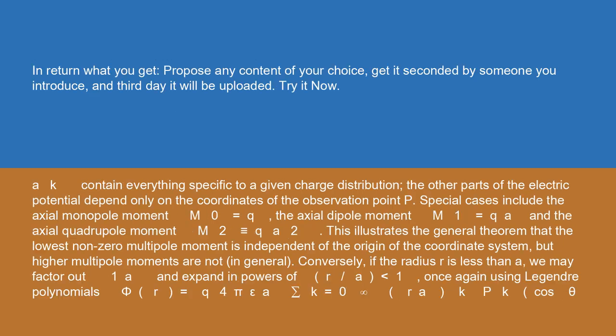The axial multipole moments m_k = Q·a^k contain everything specific to a given charge distribution; the other parts of the electric potential depend only on the coordinates of the observation point P. Special cases include the axial monopole moment m₀ = Q, the axial dipole moment m₁ = Qa, and the axial quadrupole moment m₂ = Qa². This illustrates the general theorem that the lowest non-zero multipole moment is independent of the origin of the coordinate system, but higher multipole moments are not, in general.